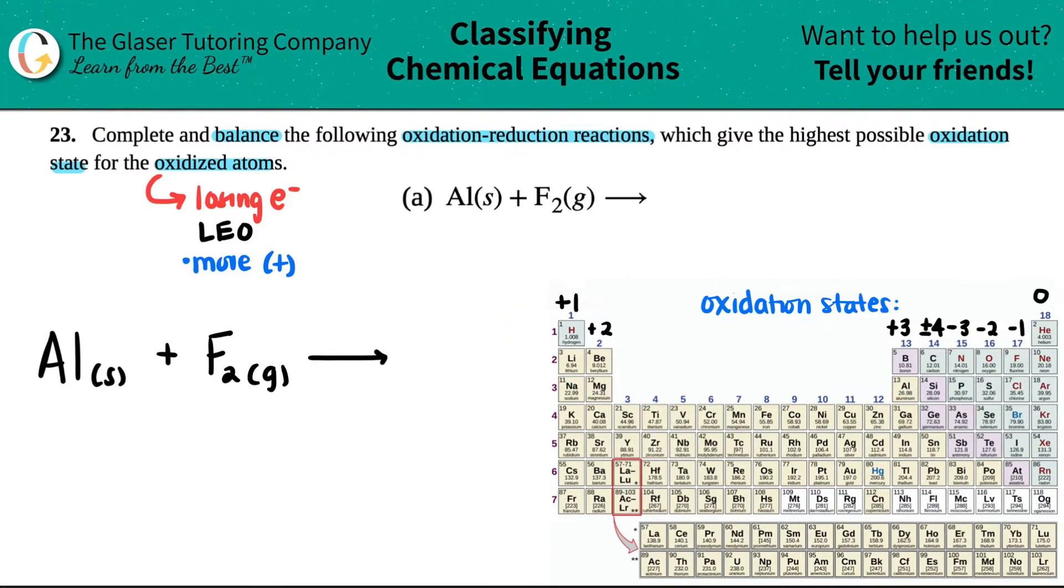Now, if we look at our trend, and you guys should memorize this trend, it makes life very simple. So if we look at the trend, aluminum, when it's a compound, wants to have a plus three charge. And fluorine, who's over here, when it's in a compound, wants to have a negative one charge.